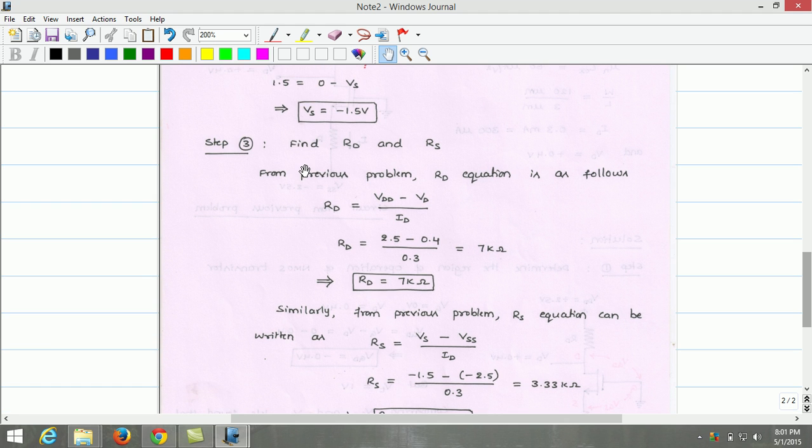Next, we will find the values of Rd and Rs. From the previous problem, the Rd equation using Kirchhoff voltage law is estimated as follows: Rd equals VDD minus Vd divided by Id. Substituting the values of VDD,